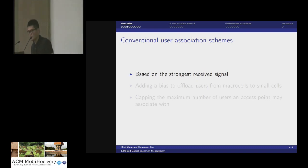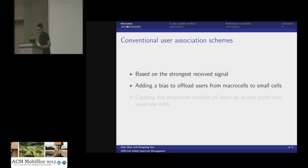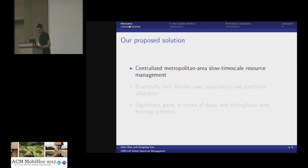For user association schemes, the most common one is based on the strongest received signal. However, in a HetNet, this shifts most traffic loads to the macro cell, which has longer coverage. One option is to add a bias to offload users from macro cell to pico cells. In some Wi-Fi systems, user association is done by capping the maximum number of users an access point may associate with. All these user association schemes are distributed and far from optimal.